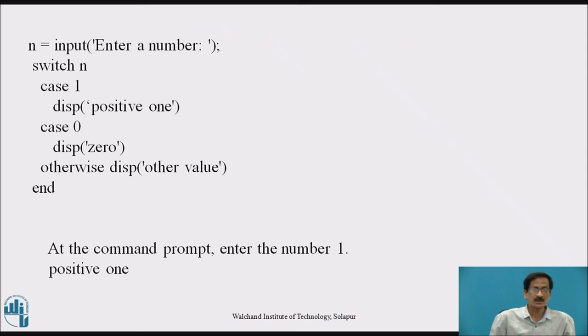N equals input 'enter a number'. Switch N, case 1 display 'positive 1', case 0 display '0', otherwise display 'other value'. In case 1, if the number is 1, it will display positive 1. In case 0, if the number is 0, it will display 0. And if case 1 and case 0 are false, it will give the message other value. In this case, after entering the number, it will give the result as positive 1.